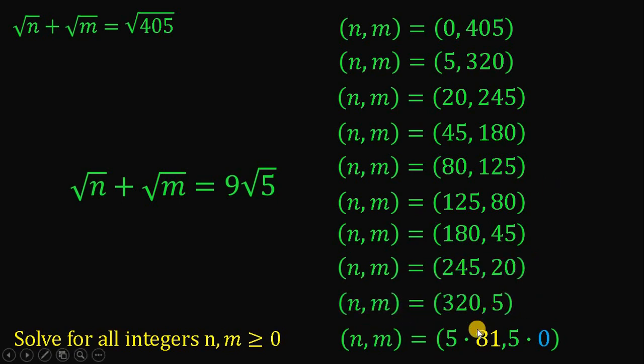And for the last one, we have 405 comma 0. And that's all the possible values of n comma m, where n comma m is greater than or equal to 0.